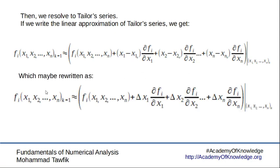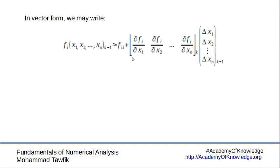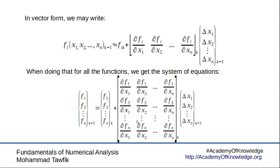This may look very general, so let's rewrite it in matrix or vector form. The value of the function at any iteration equals the value of the function at the previous iteration, plus the partial derivatives of the function with respect to each variable multiplied by a vector of the changes in the variables. If we repeat this for every function fi, we get a set of equations where the function values at new variables equal the values at old variables plus a matrix.